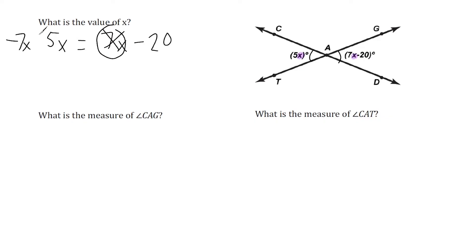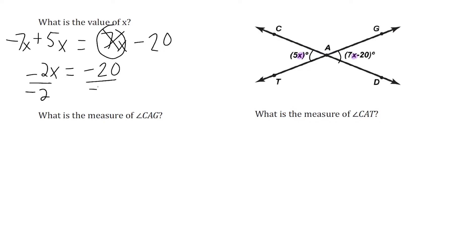I'm going to combine it with this positive 5x. When we have a negative one and a positive one, we have more negatives, so we get negative 2x equals negative 20. To get x by itself, we divide both sides by the coefficient of negative 2, leaving us with x equals negative 20 divided by negative 2, which is positive 10.